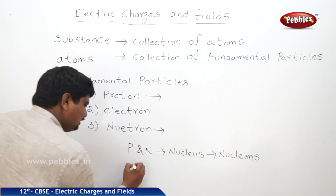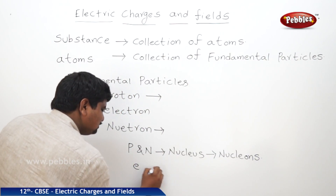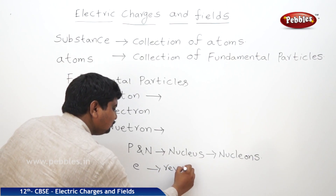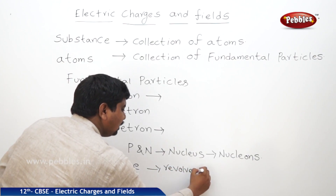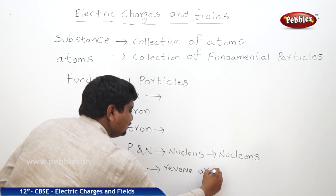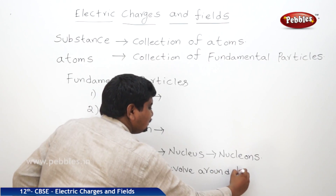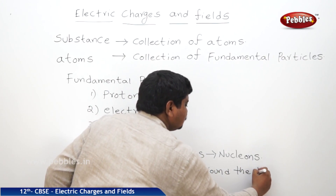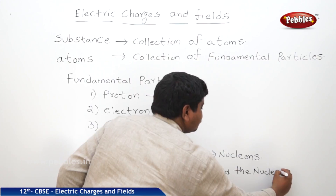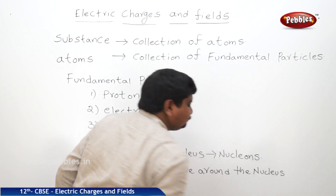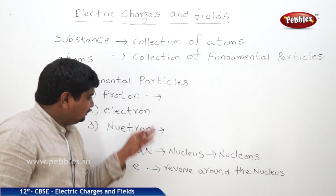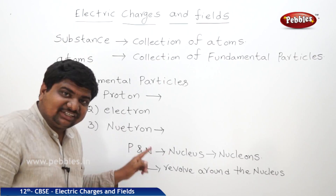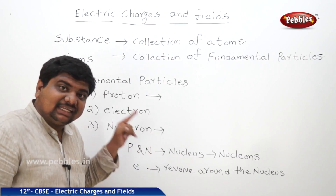As for the electron, electrons revolve around the nucleus. These fundamental particles are classified based on their charge.